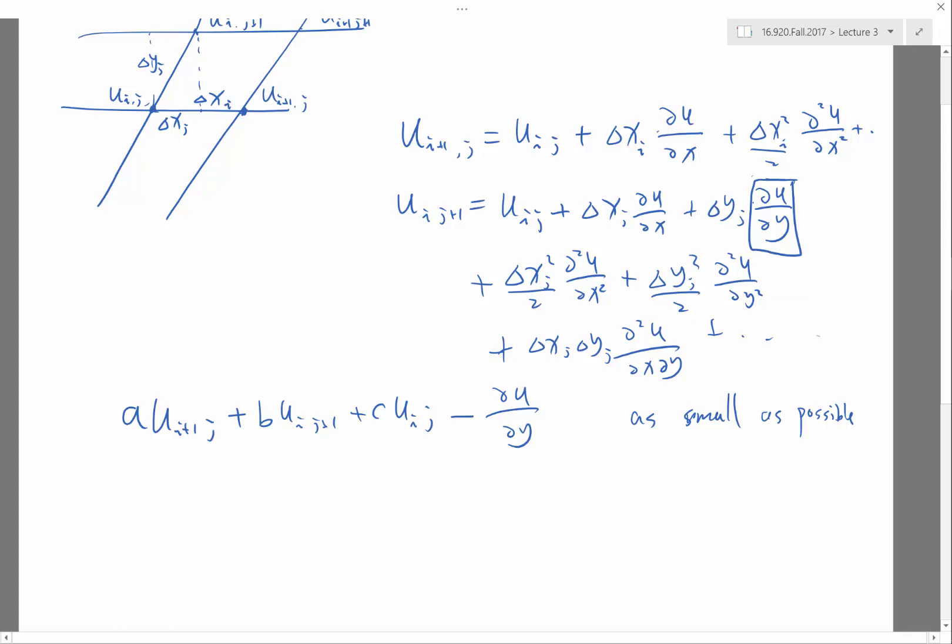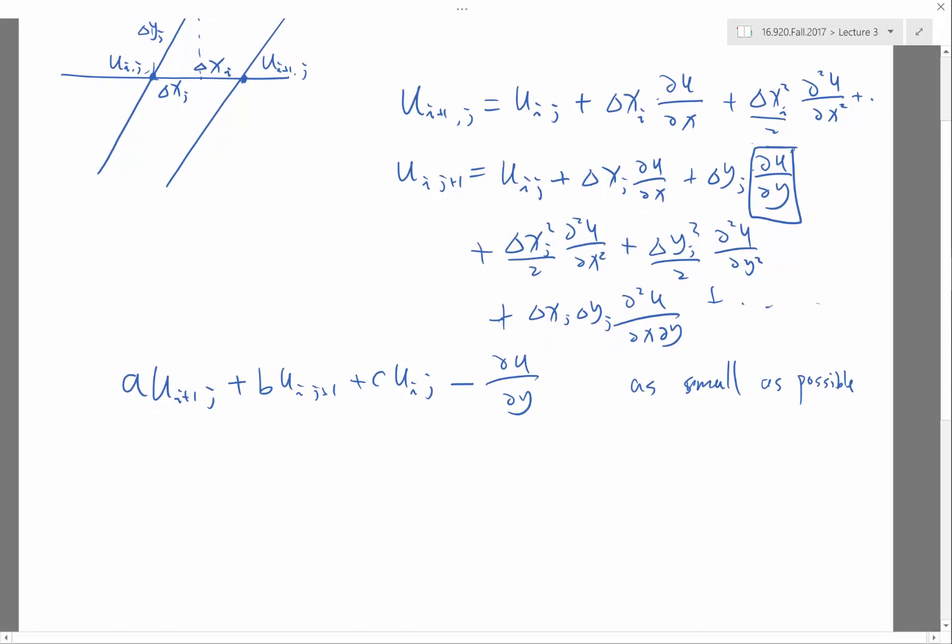So to achieve this, I want to select the values of A, B, and C to cancel as many terms, especially the terms with a small exponent on Delta X and Delta Y.